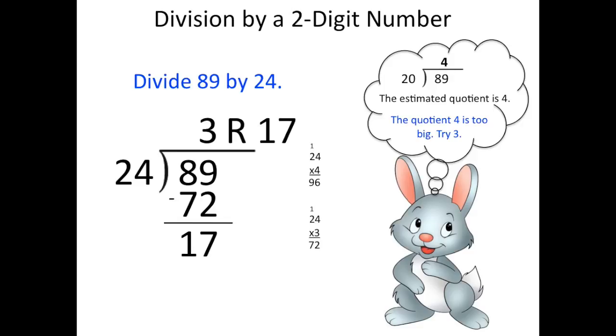So again, we're rounding the divisor so that we can get a good estimate of how many times the divisor fits into the dividend. In this case, the estimate was 4, but then we saw that that was too much. So then we tried 3.